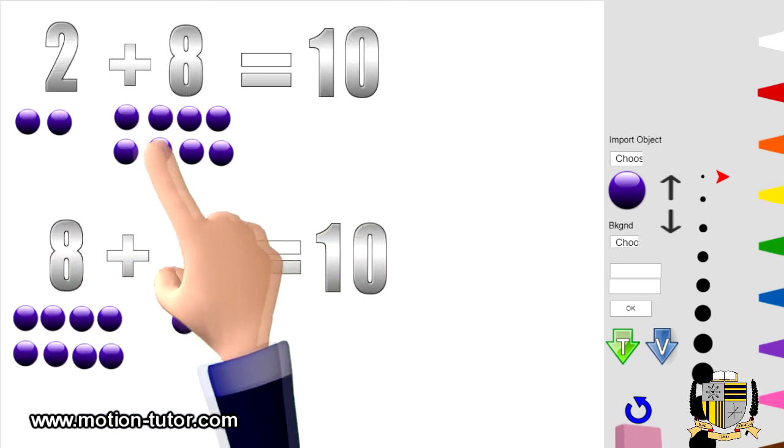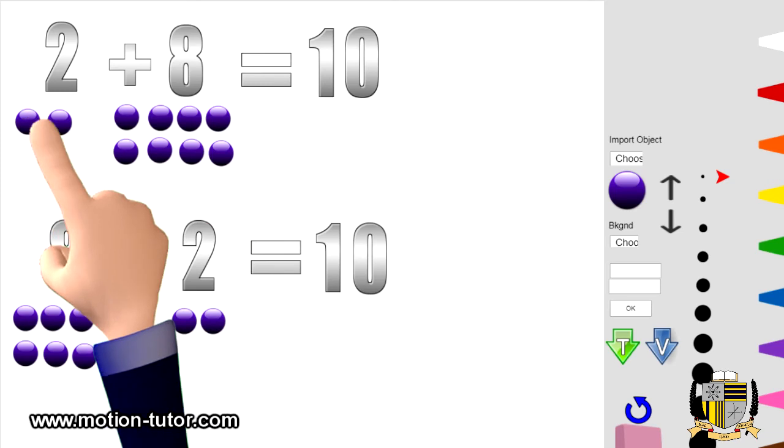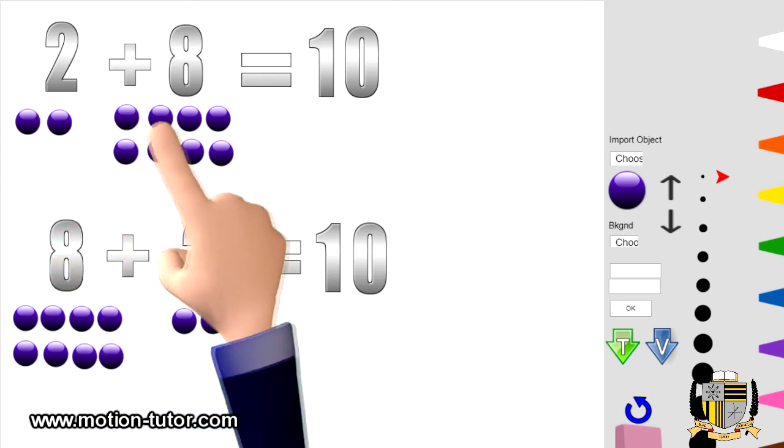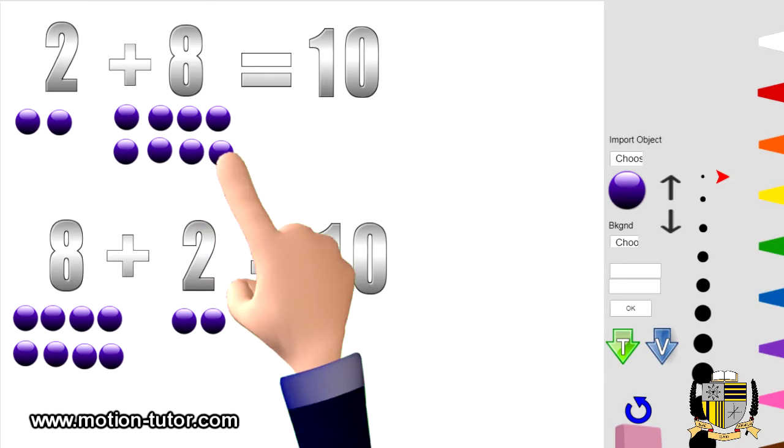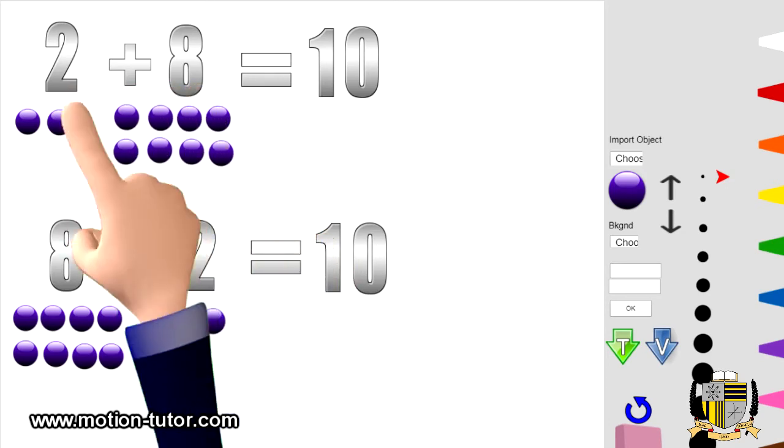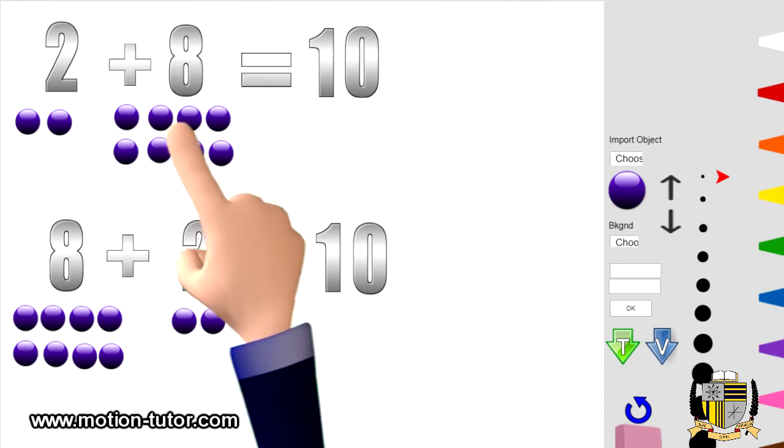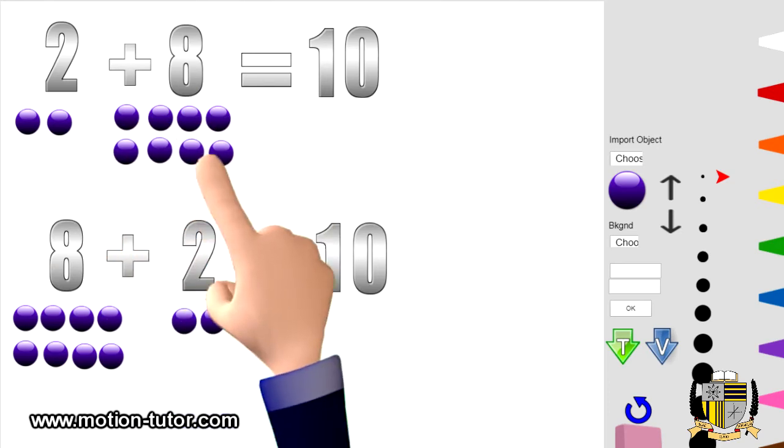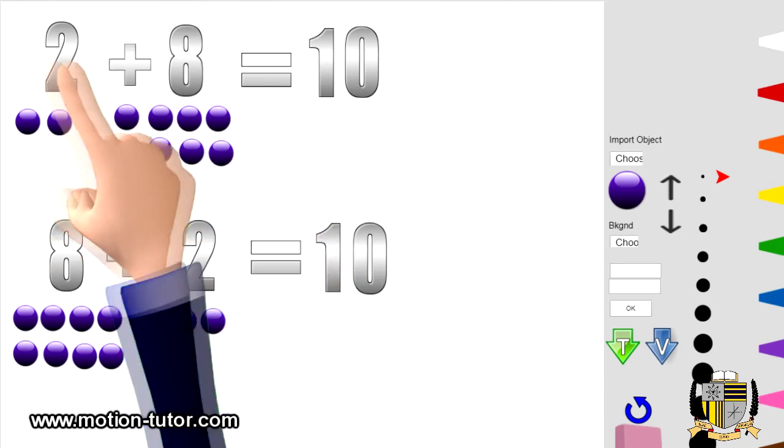So we have a two and an eight. Here's two: one, two. And here's eight: one, two, three, four, five, six, seven, eight. Two plus eight is one, two, three, four, five, six, seven, eight, nine, ten. So two plus eight is ten.